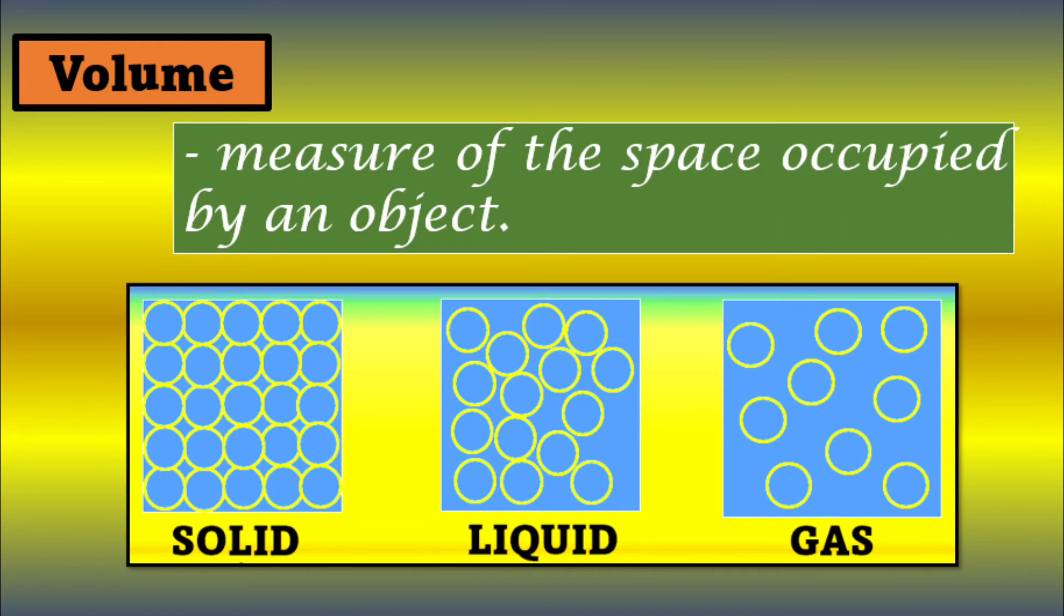Let's talk about the second property of matter, which is volume. Volume is a measure of space occupied by an object. This is the amount of space that a substance or an object takes up. This is the space occupied by particles in solid, liquid, and gas.